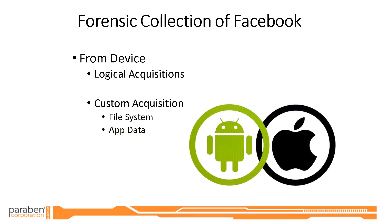When we look at the device, the area that we collect from is typically done through a logical acquisition — this is the most common acquisition type for both Android and iOS devices. The second option is a custom acquisition, which allows you to focus on both the file system and the app data. The value of this is that it is a much faster acquisition; if you have limited access time, it can be done in less than 15 minutes.